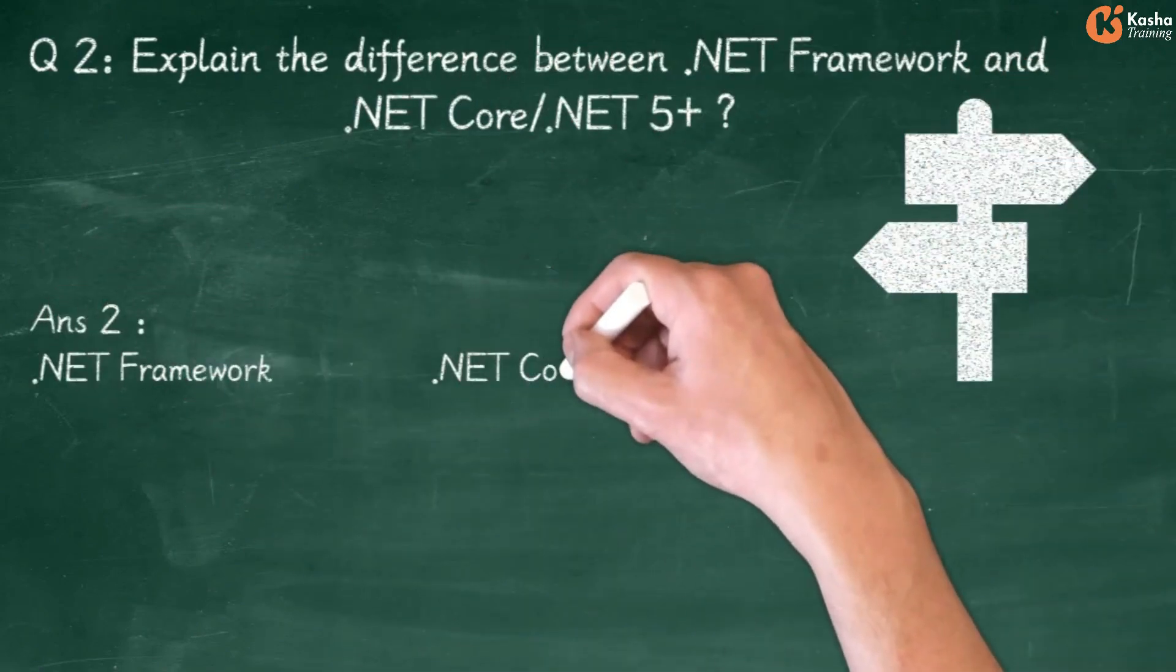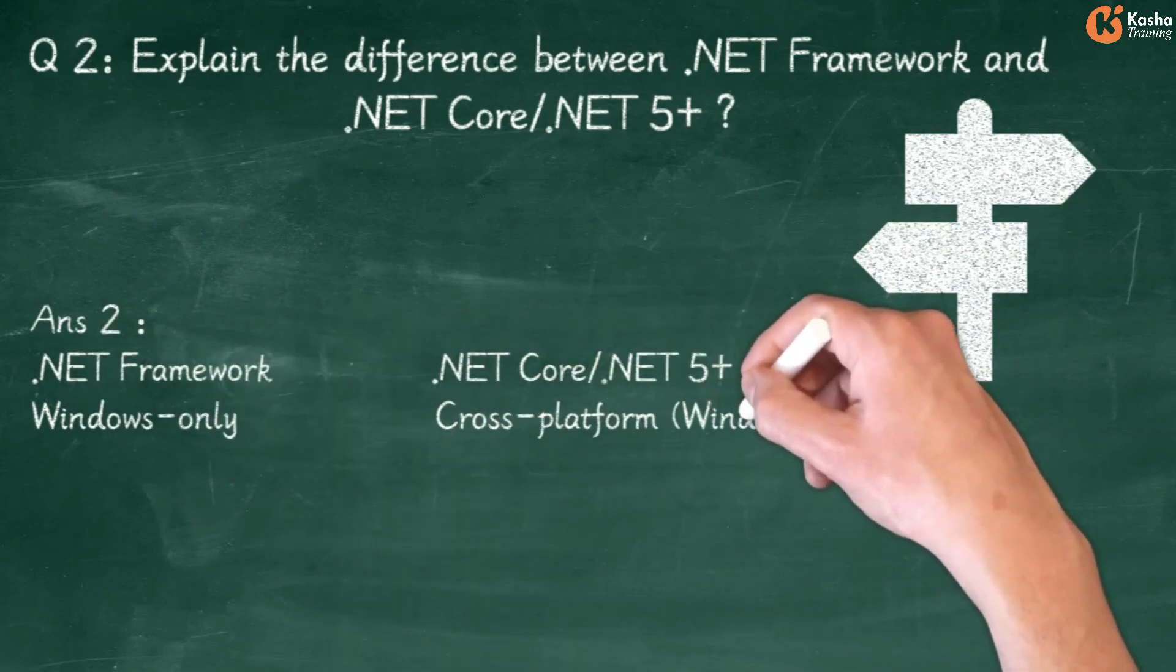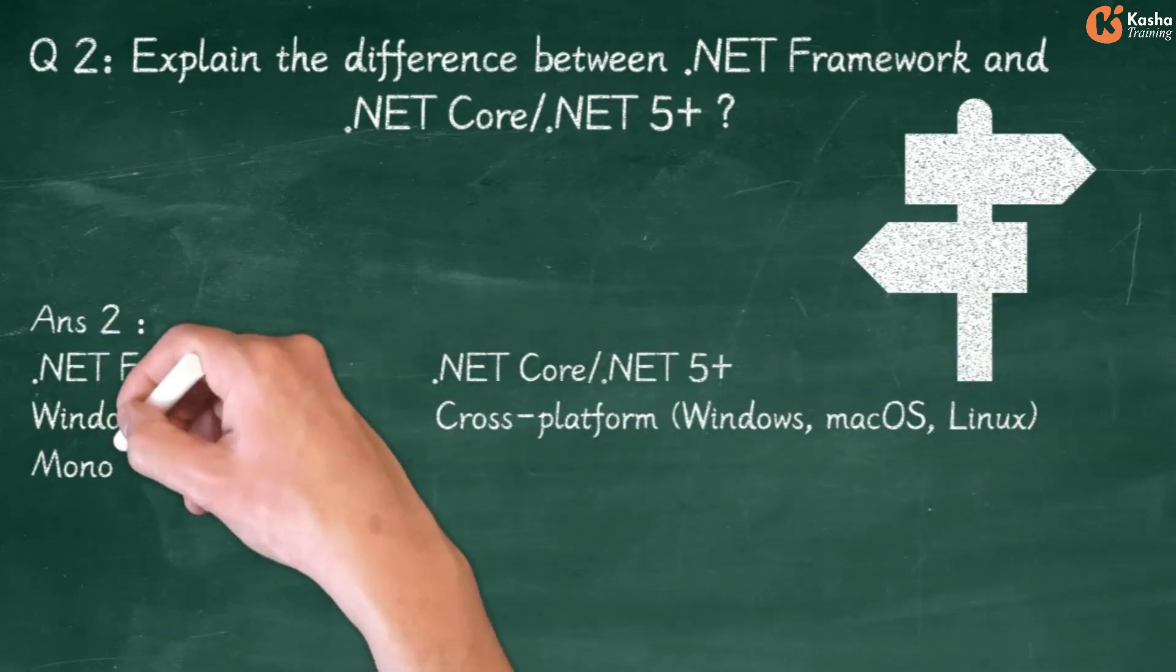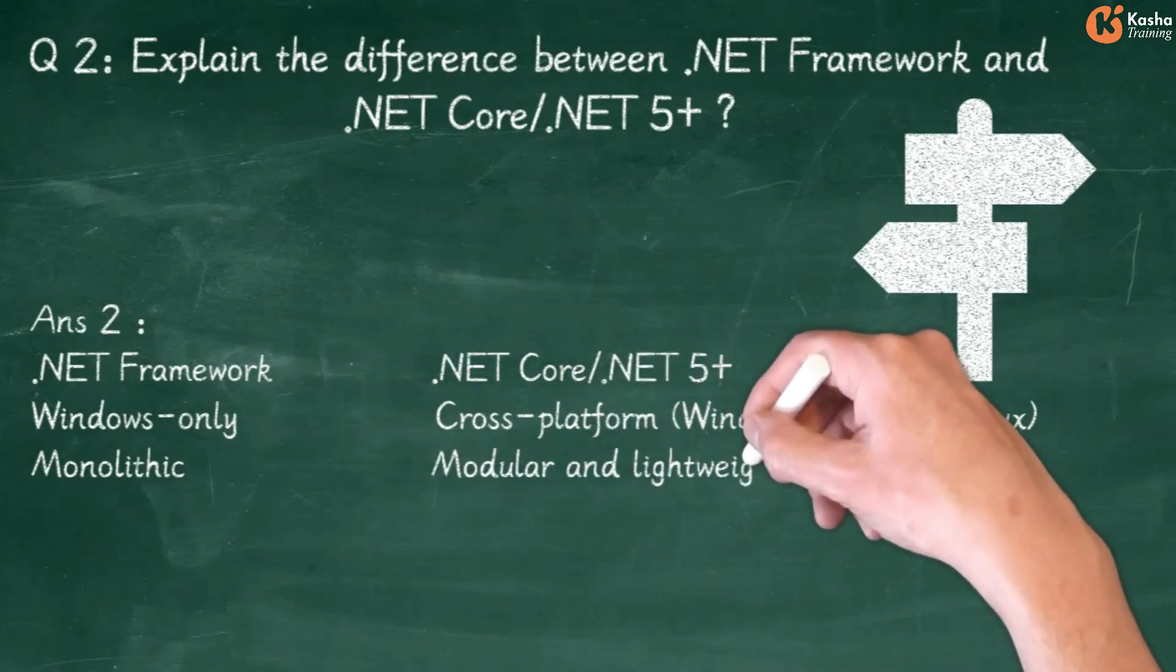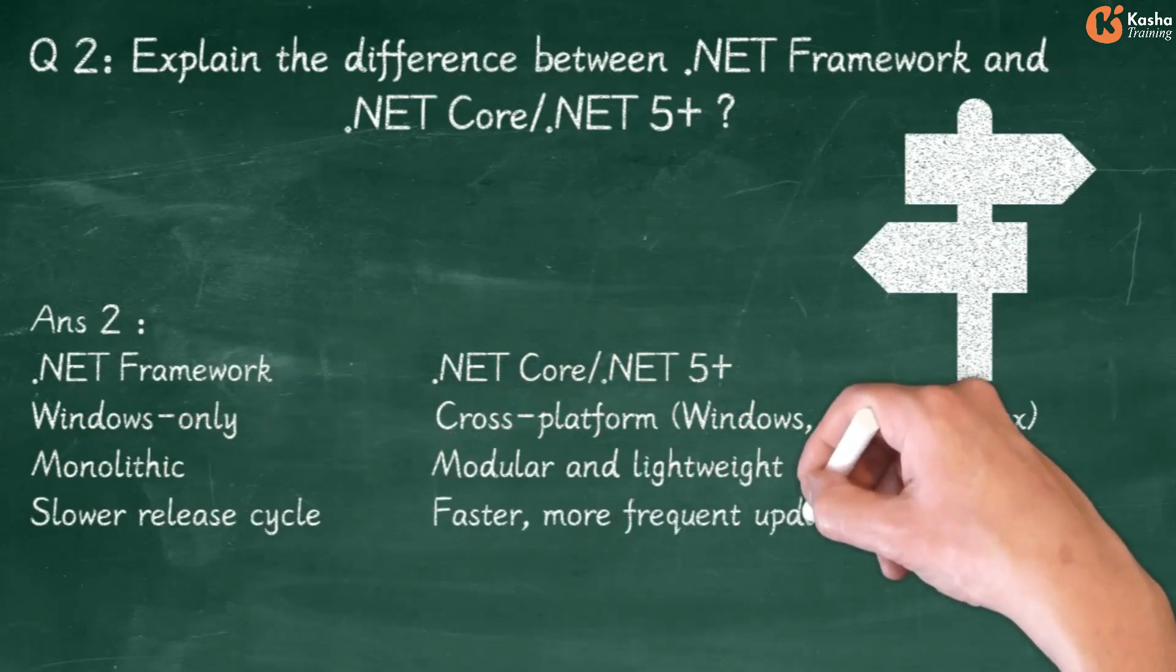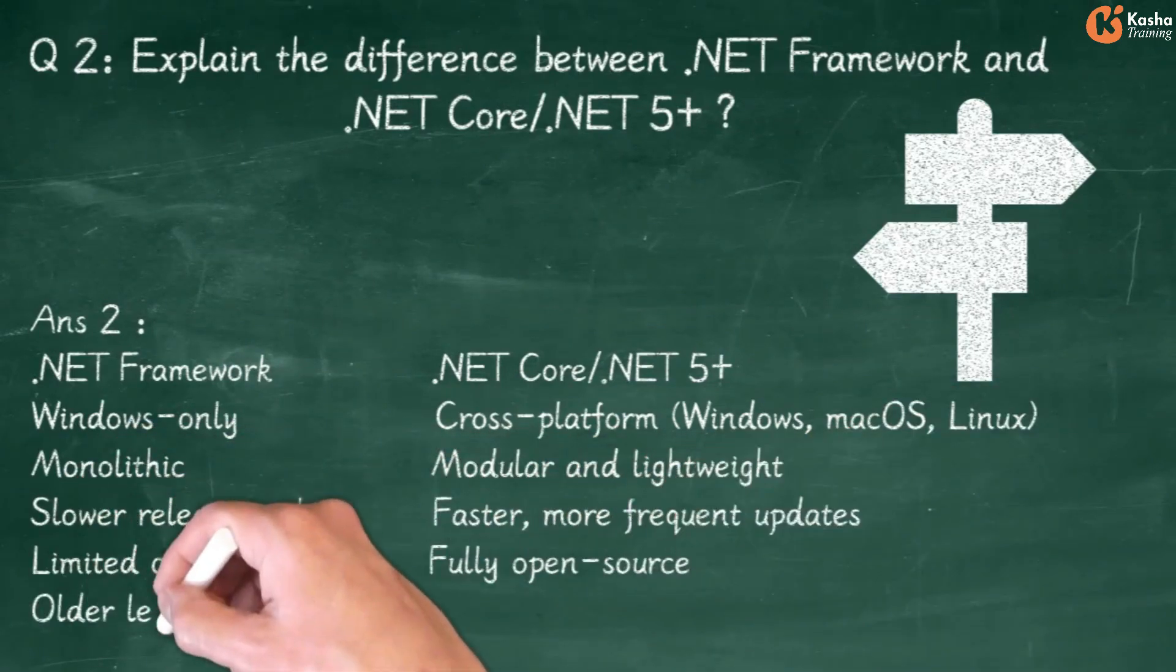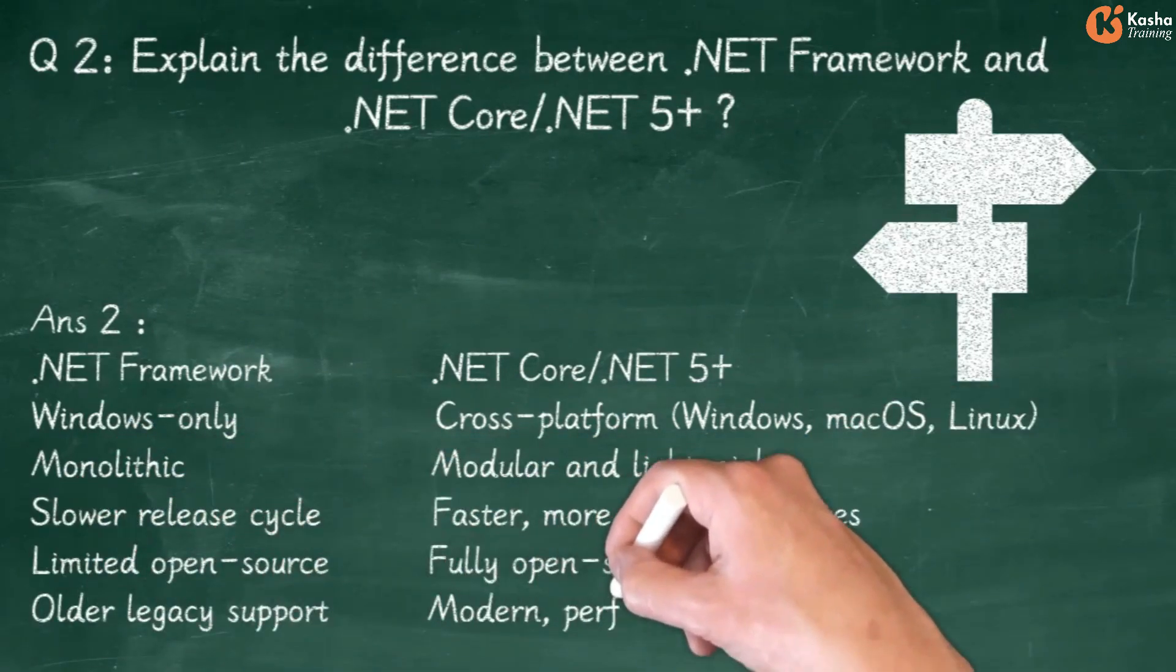Answer 2: .NET Framework is Windows-only, while .NET Core and .NET 5+ are Cross-Platform supporting Windows, macOS, and Linux. Framework is Monolithic while Core is Modular and Lightweight. Framework has a Slower Release Cycle versus Faster, More Frequent Updates for Core. Framework has Limited Open Source versus Fully Open Source. Framework supports Older Legacy applications while Core is Modern and Performance Focused.